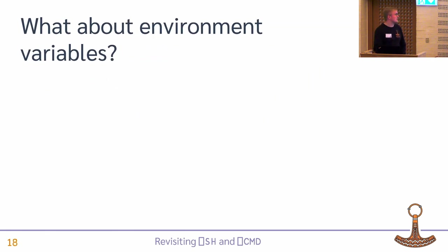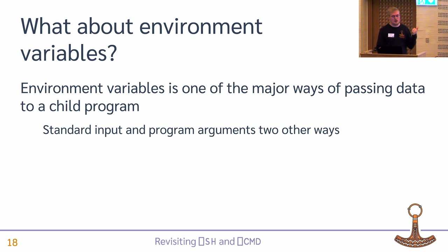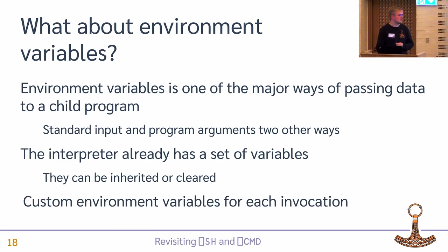What about environment variables? I see environment variables as one of the three major ways of passing information to a child program, with standard input and program arguments being the other two. It'd be nice if we had a method to specify these. The interpreter itself already has a set of variables, so we need to be able to say whether we want to extend that set or start from a clear new one. Each invocation of Quad-SH should be able to set its own environment variables in the child program.